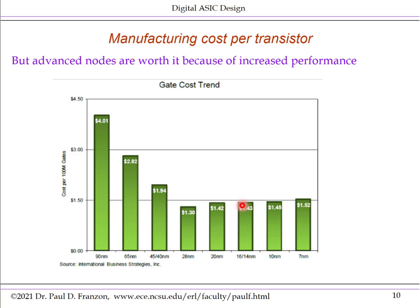Building a 7nm fab is a multi-billion dollar venture, and there's a lot of sunk costs, which translates to increased cost per device. This will probably continue — the cost per transistor will remain flat as we keep scaling. This does not mean that advanced nodes are not worth it, because you get increased performance from the increased transistor count, increased gate speed, and decreased power consumption.